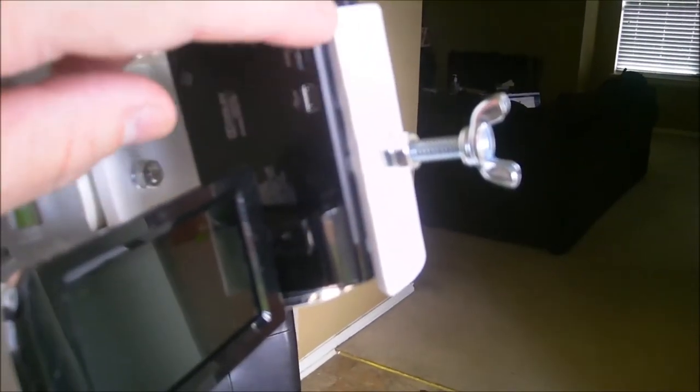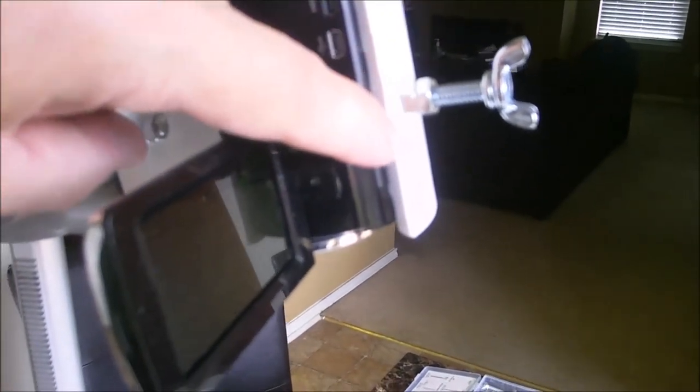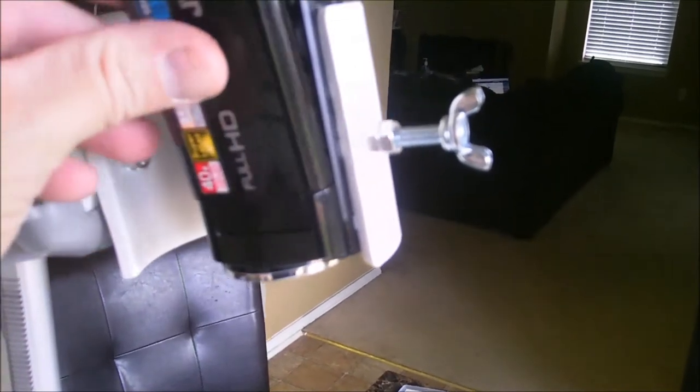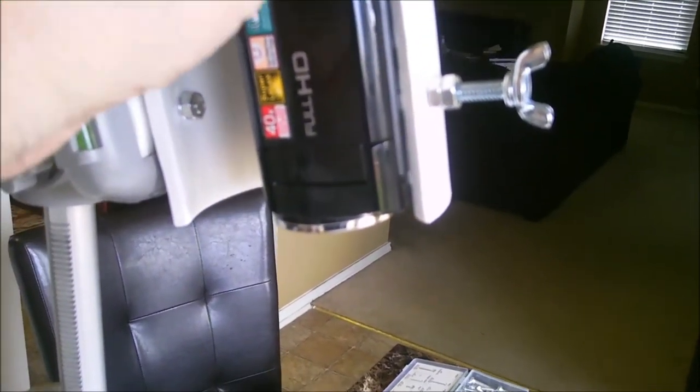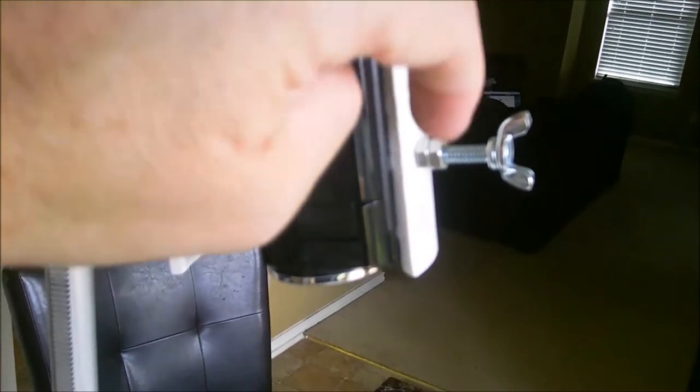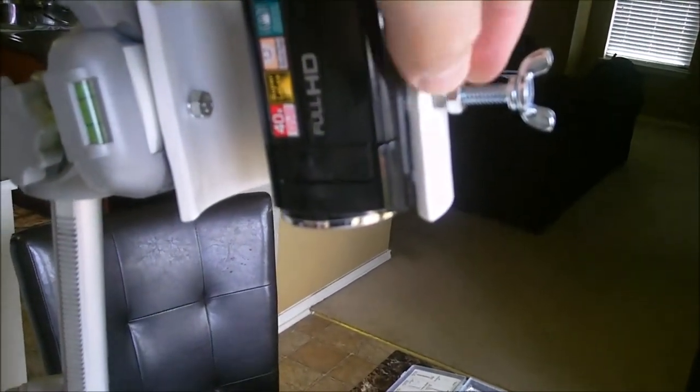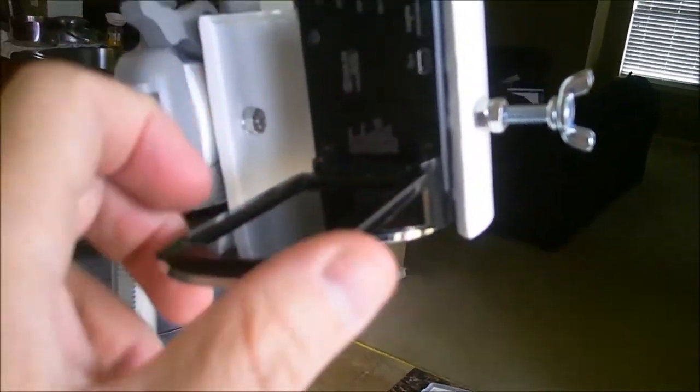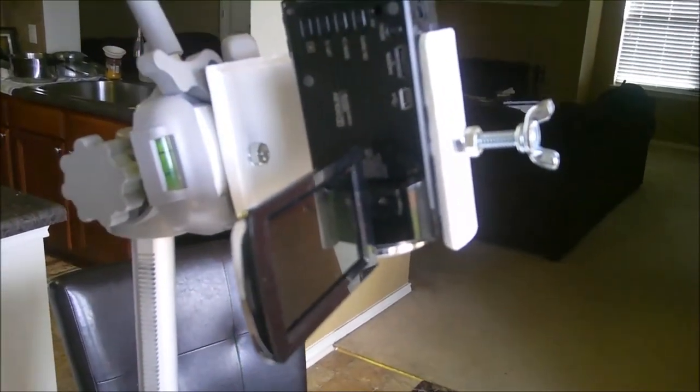One thing I forgot to point out is note how I cut this so it's not flush for the camera. It's a little bit behind the bottom of the camera. The reason for that is it allows me to close this easily and keeps that out of the way. So, when you're putting this hole into the PVC, try and figure out exactly how far away from the edge you need the camera to sit because you don't want to encumber the ability to open and close your viewing screen.